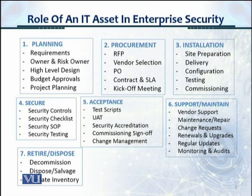Step five is acceptance, as you're getting ready for commissioning sign-off. You have test scripts, perform user acceptance testing (UAT), and do a security accreditation — the security department comes in to make sure the device or equipment is configured as per its use and as per the plan. You do a commissioning sign-off by management, then complete the change management steps and move it into production.